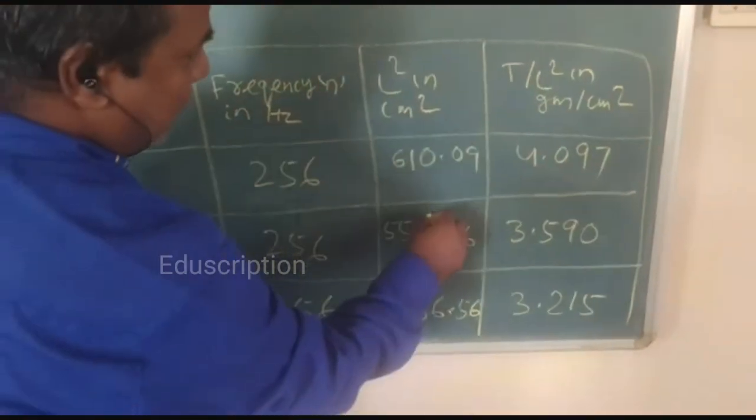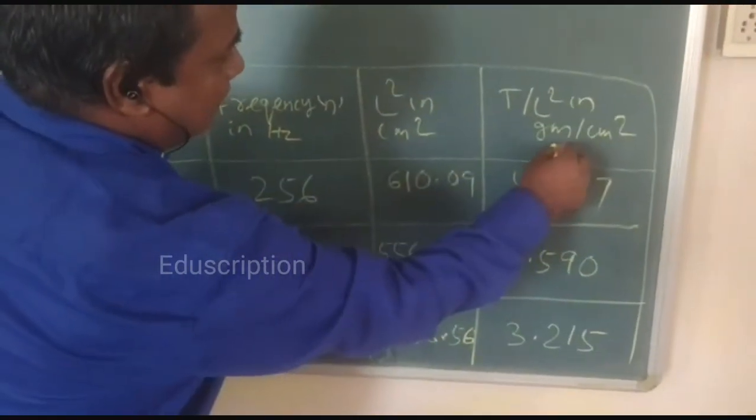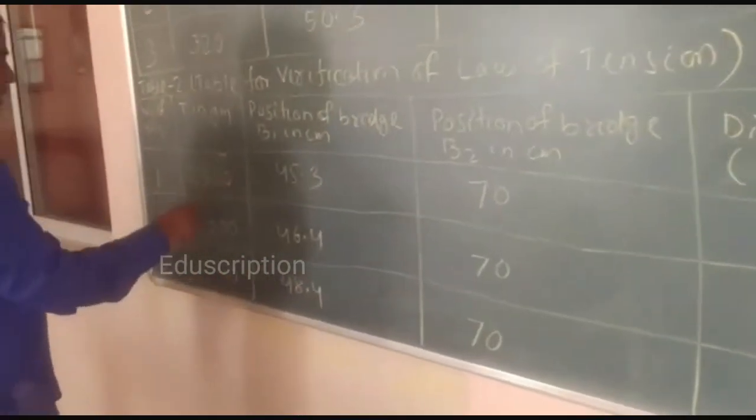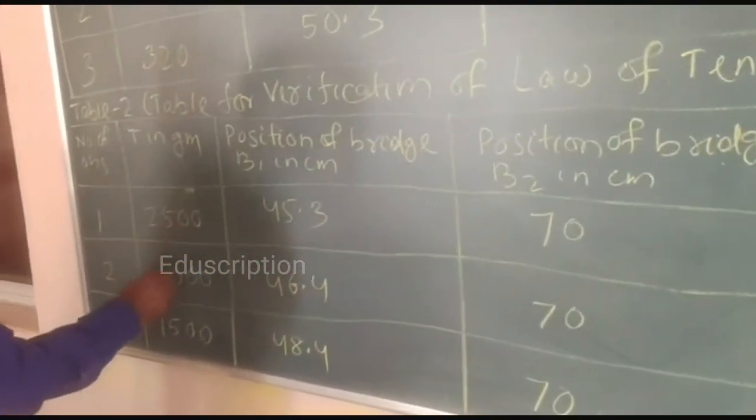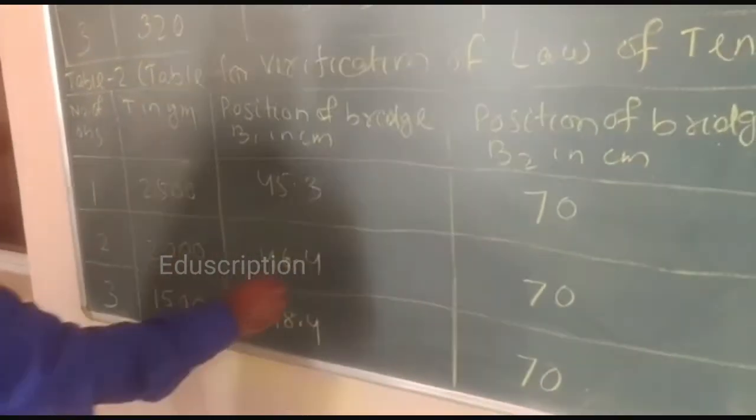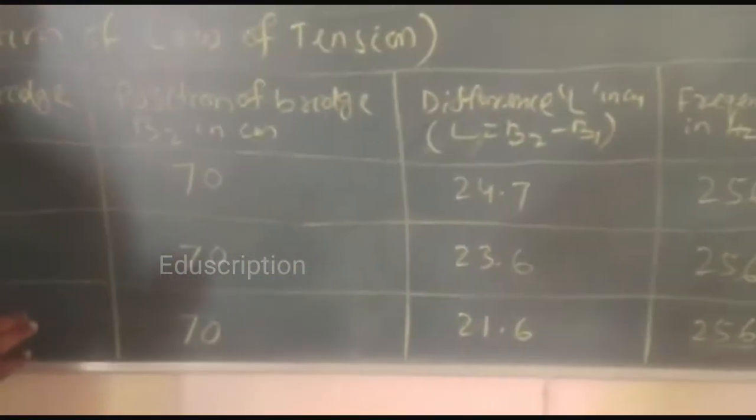Then L square in centimeter square, then T by L square in gram per centimeter square. And your tension is here, 2500 gram, 2000 gram and 1500 gram. For this tension, these are the data we have found from your experiment.